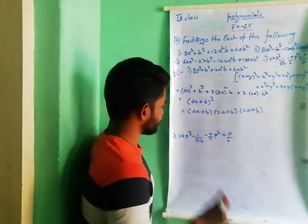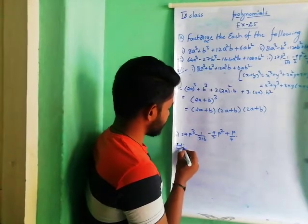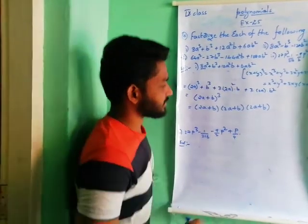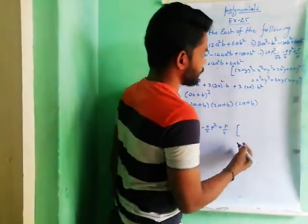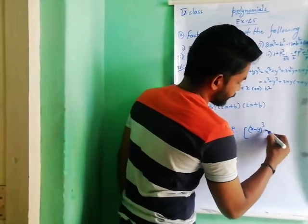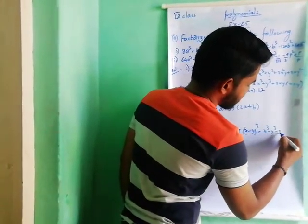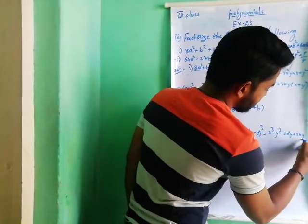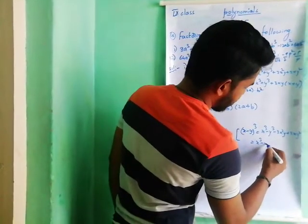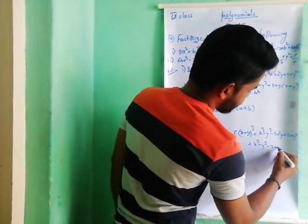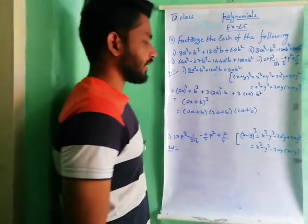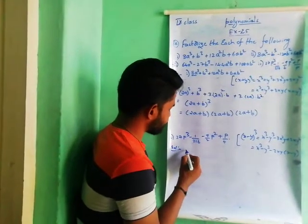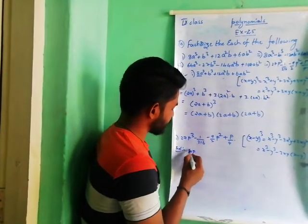Coming to the fourth expression. Here we have 27t cube, and there is a minus sign, another minus sign, and a plus sign. So we have to represent (x − y) whole cube, which equals x cube minus y cube minus 3x square y plus 3xy square, or x cube minus y cube minus 3xy(x − y). Now 27t cube means (3p) whole cube, because 3 cubed is 27. And minus (1/6) whole cube — because 6 cubed is 216.